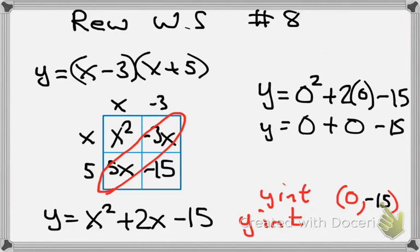So from standard form, the best clue that they give me is my y-intercept. Because I just plug 0 in for x, 0 in for x squared.